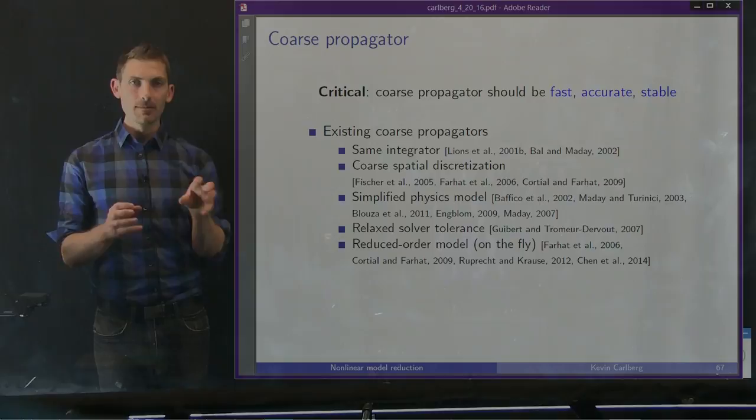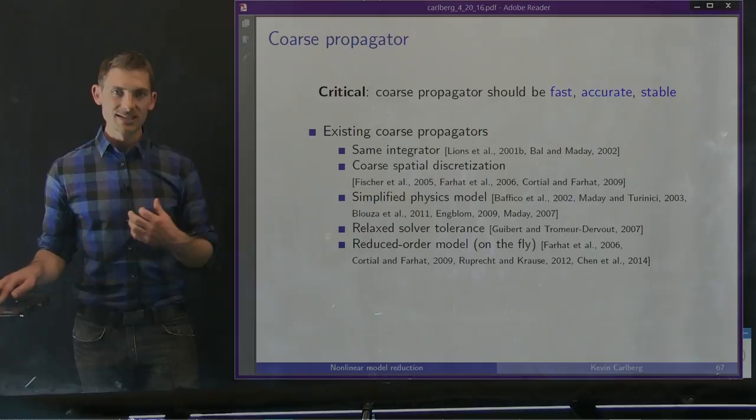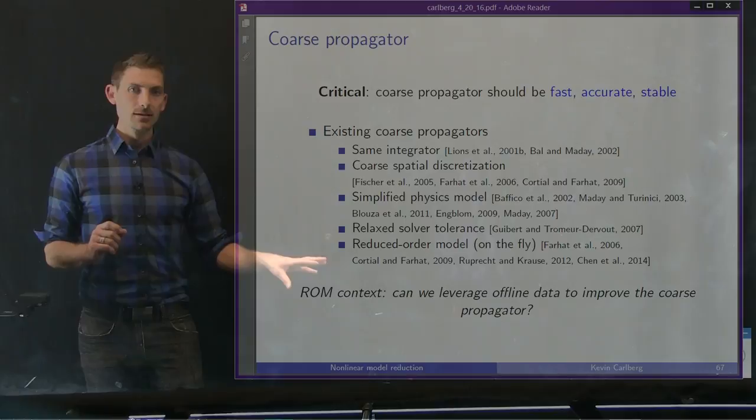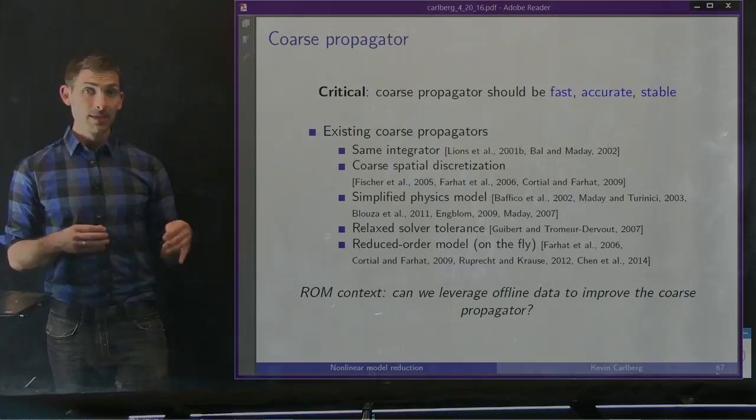But keep in mind, we're trying to accelerate a reduced order model itself. What we'd like to do is take a step back and say: we actually have information we can use to generate a very good coarse propagator. In our ROM context, we want to leverage the offline data available from the training stage to improve the coarse propagator. And that's the main theme of this work.